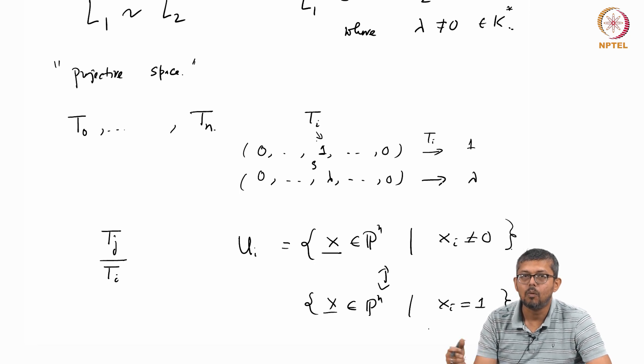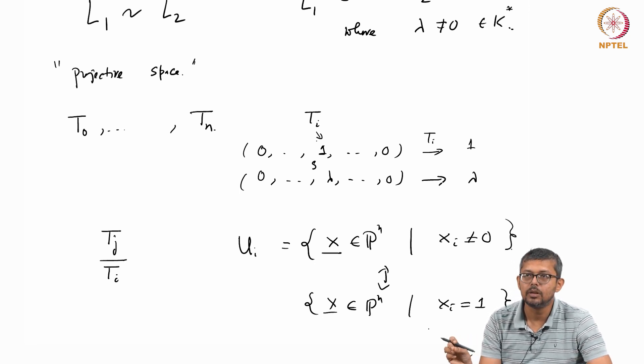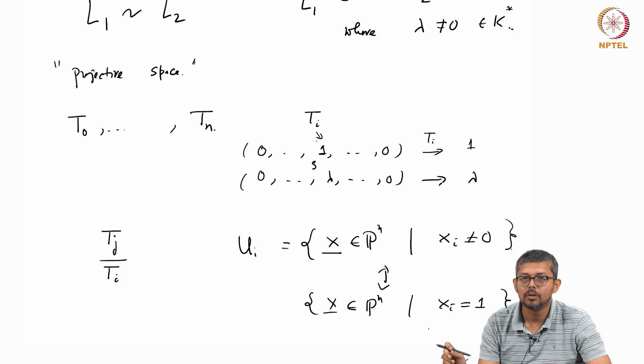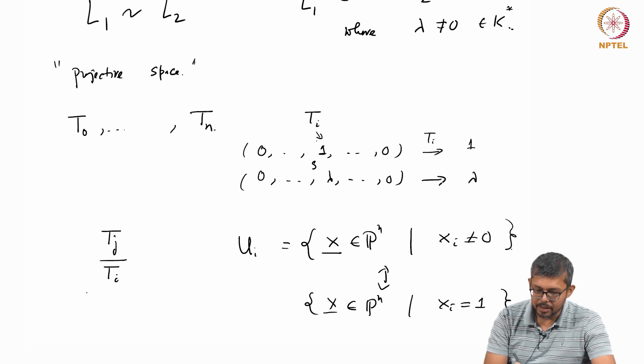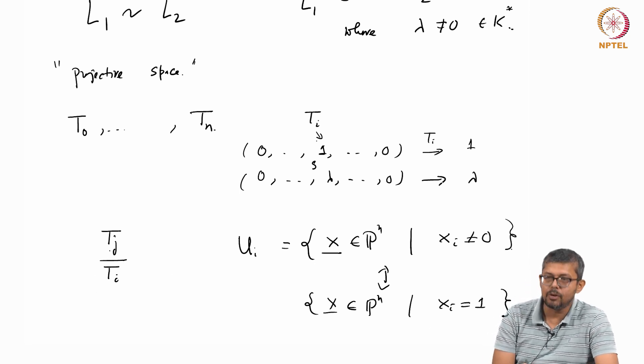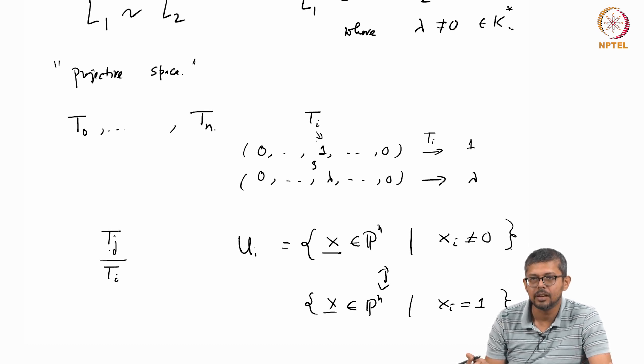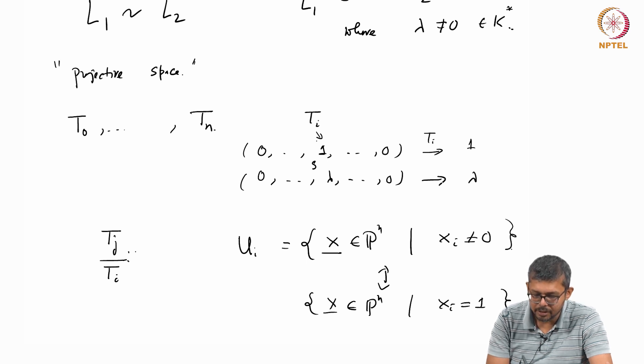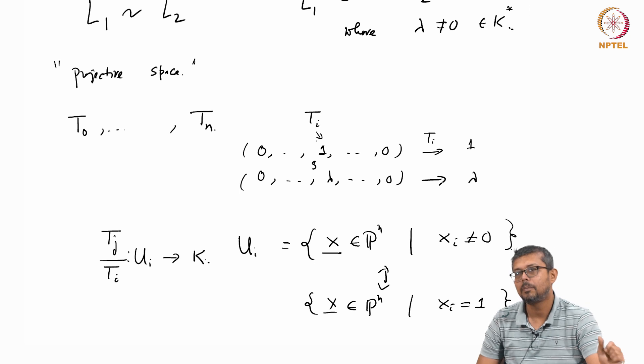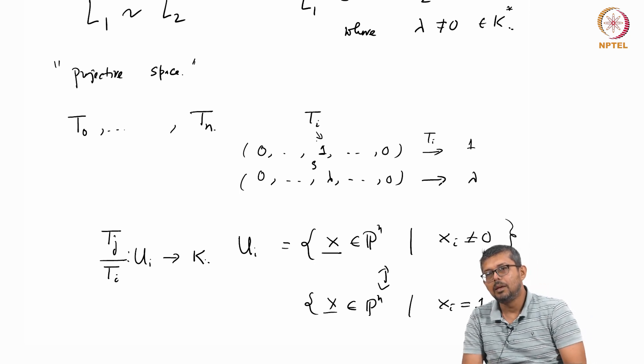But this is same as you can identify with all the points in P^n such that x_i equals 1. Because any nonzero, you can identify with the coordinate being 1 by scaling down, by scaling. So then on the t_j, now if you consider t_j/t_i, j is another coordinate, then this is a function on U_i.